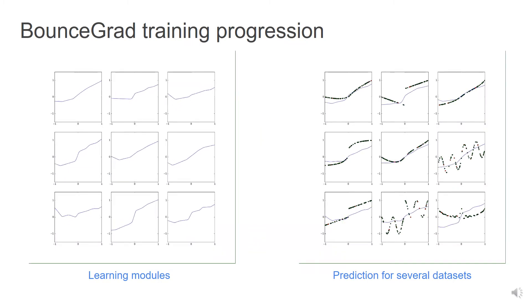Here we see BounceGrad in action for the dataset of functions. On the left, we start with unspecialized modules and, on the right, with random structures. As training progresses, modules specialize and structures slowly settle into the optimum. Slowly optimizing structures and modules, we allow them to adapt to each other, breaking the chicken and egg problem.